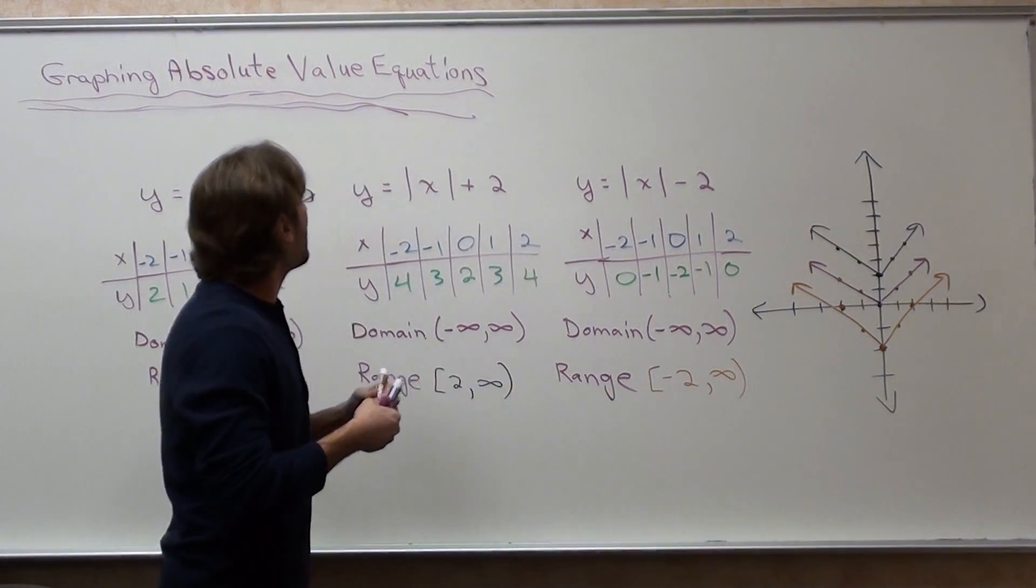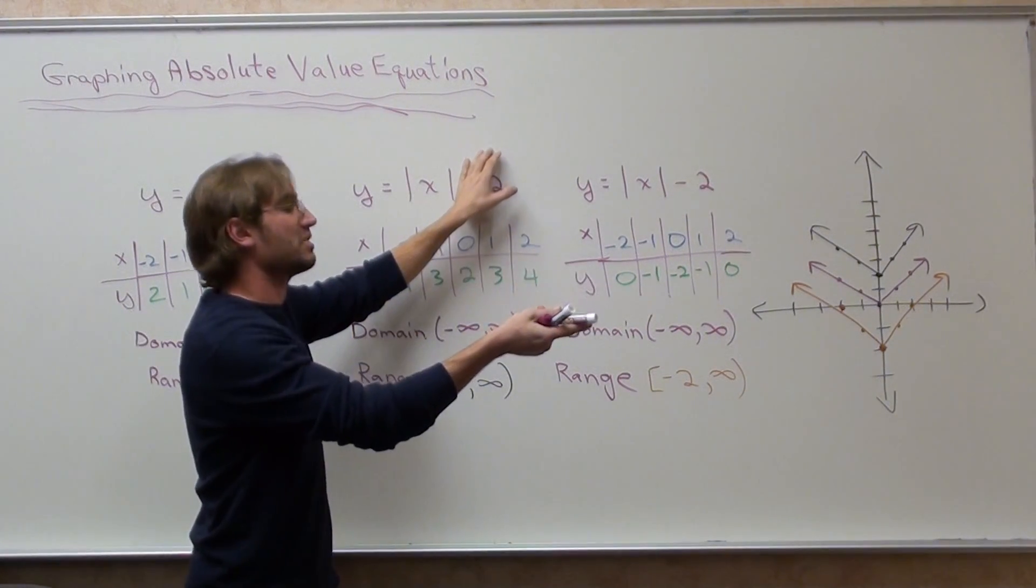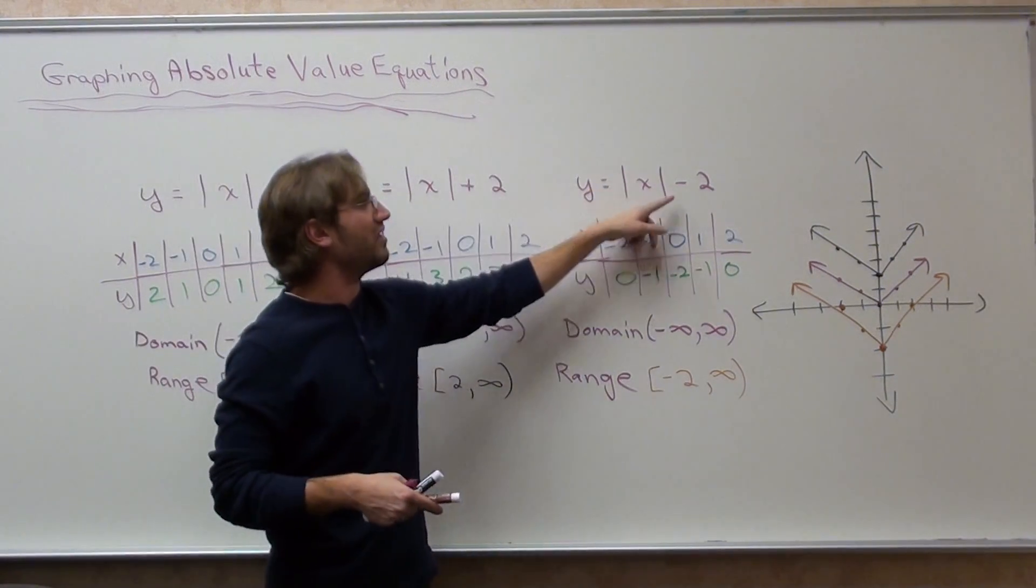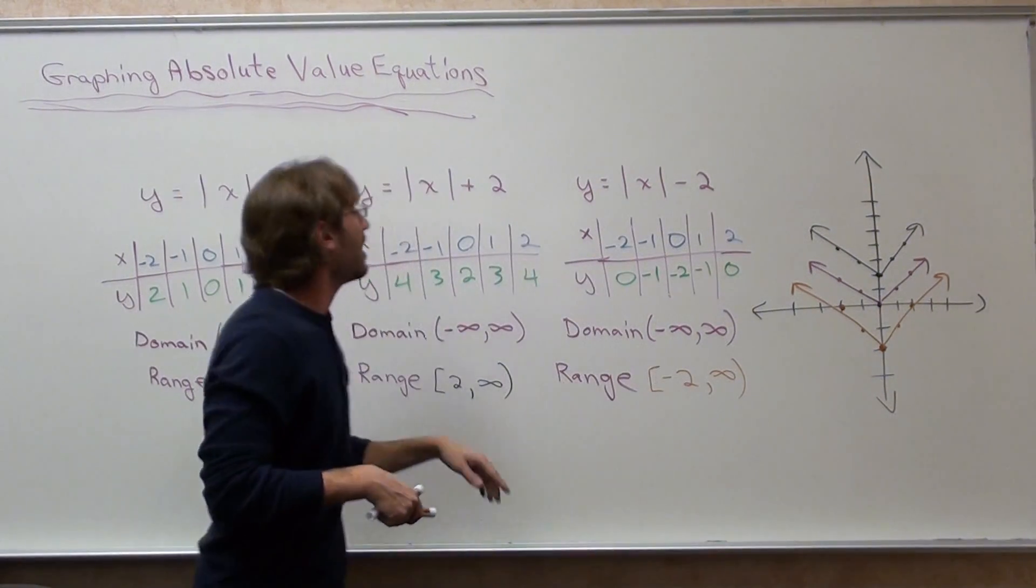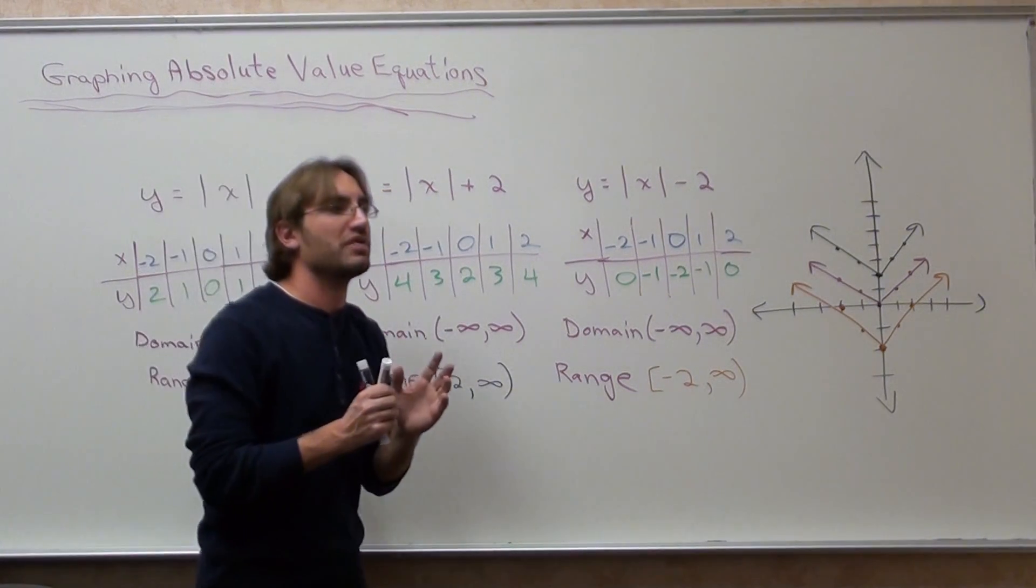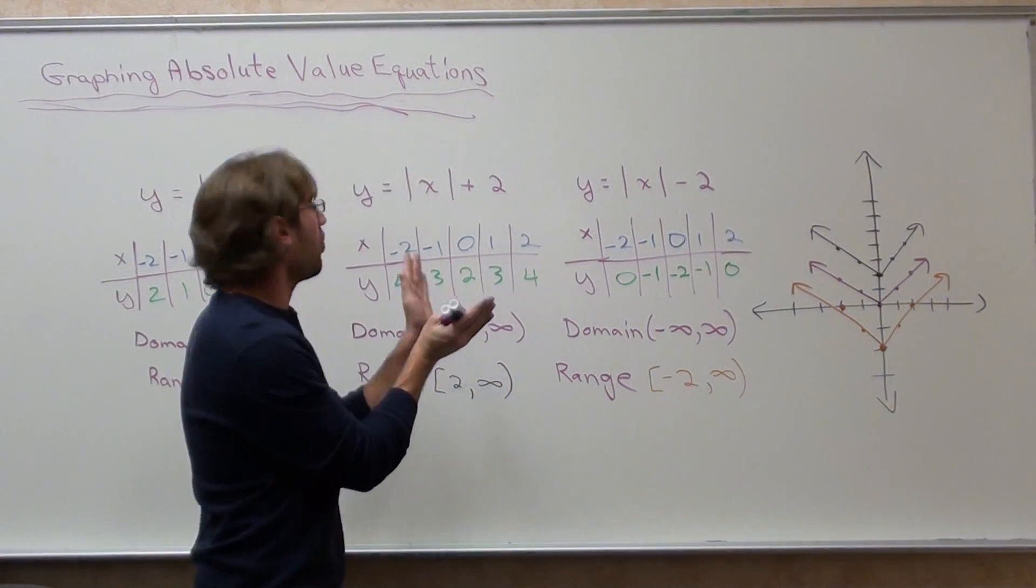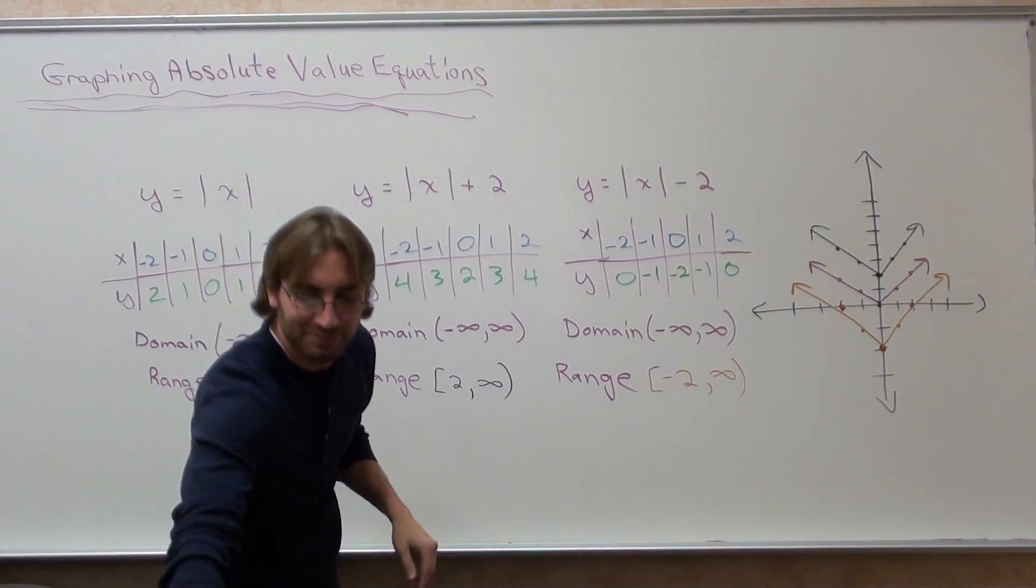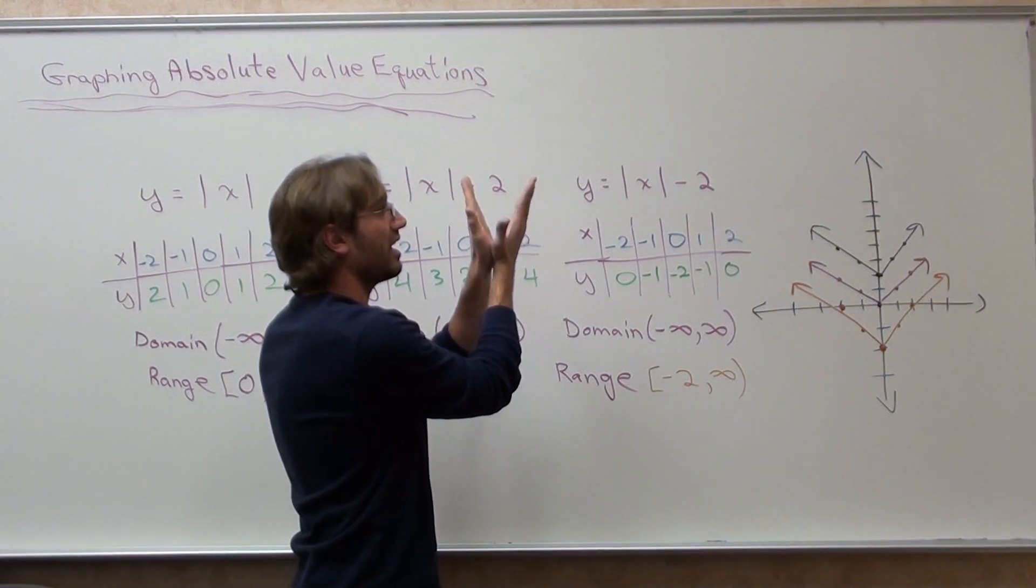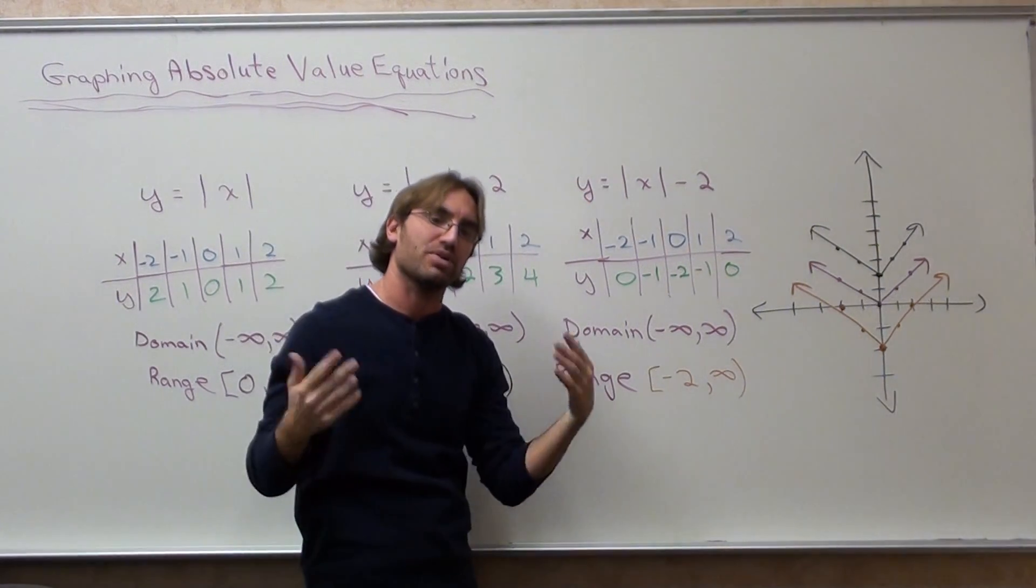So, if it's a number inside the absolute value, if it's negative, it shifts to the right. If it's positive, it shifts to the left. If it's after the absolute value that's positive, it goes up. If it's negative, it goes down. And if it's a number inside the absolute value, in front of the x, it shifts how high it goes, how fast it goes. If the number is 1, then it goes like this. If the number is bigger, then it goes up faster. And if the number is smaller than 1, it goes up slower.